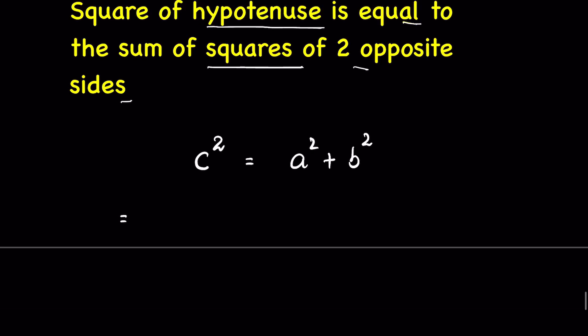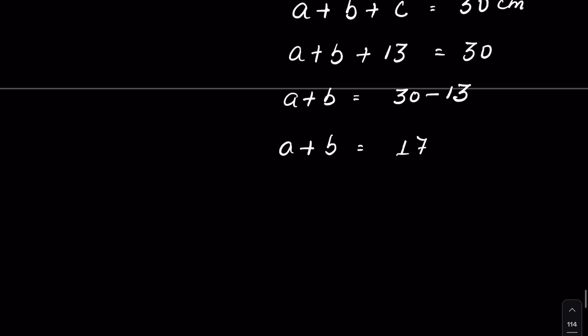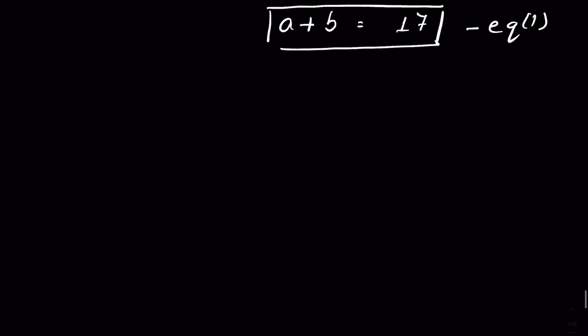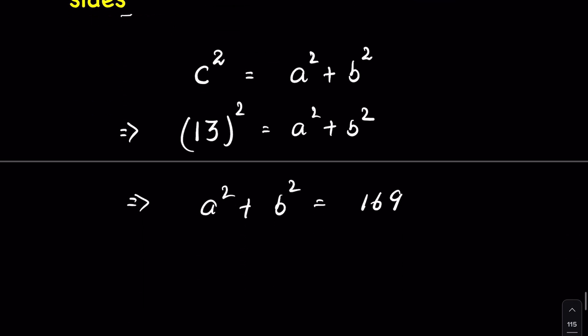c² = a² + b². Given c is 13 units, so 13² = a² + b², or a² + b² = 169. Let a + b = 17 be equation 1, and a² + b² = 169 be equation 2.